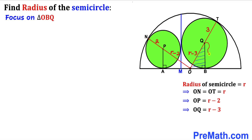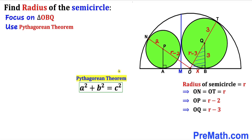In triangle OBQ, BQ is the radius of the green circle, so that is three units. Let's assume that the distance OB is x units. Since OBQ is a right triangle, we apply the Pythagorean theorem: a² + b² = c². Calling the hypotenuse side c, we fill in: x² + 3² = (r − 3)².